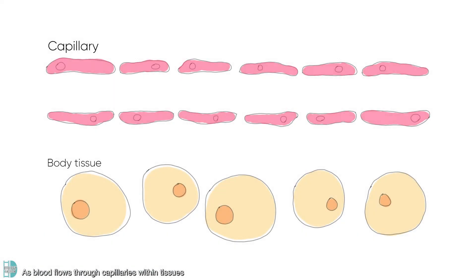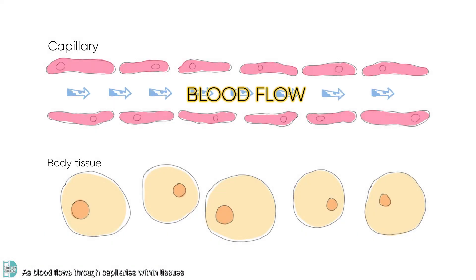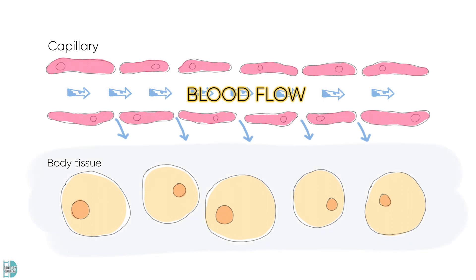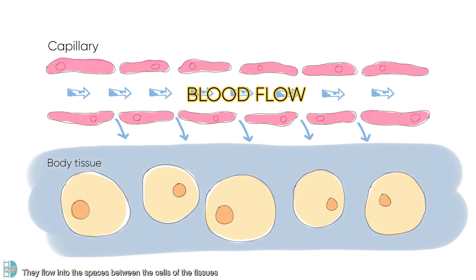As blood flows through capillaries within tissues, some of the plasma leaks out through the gaps between the cells in the walls of the capillary. This fluid flows into the spaces between the cells of the tissue, forming tissue fluid.